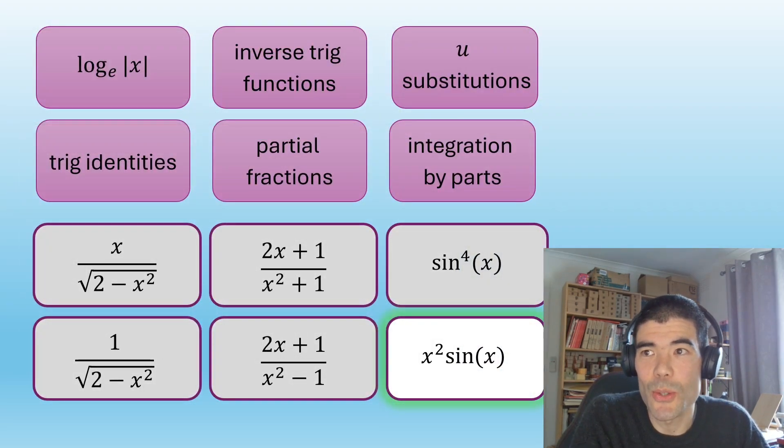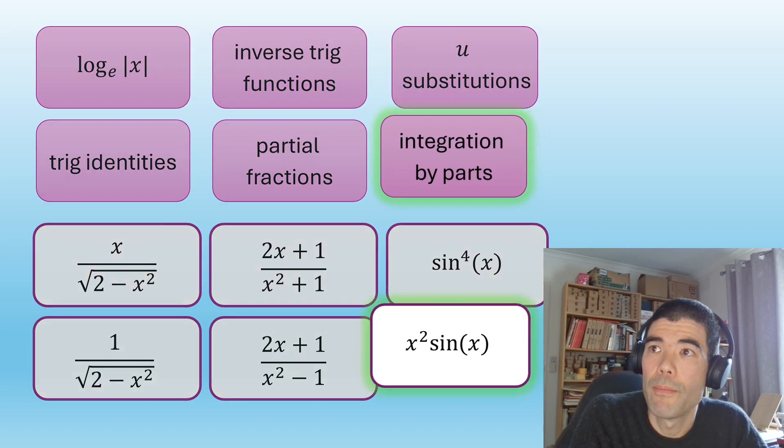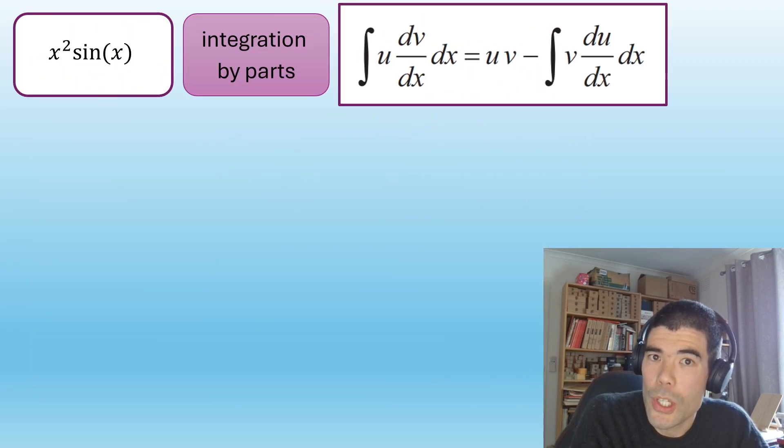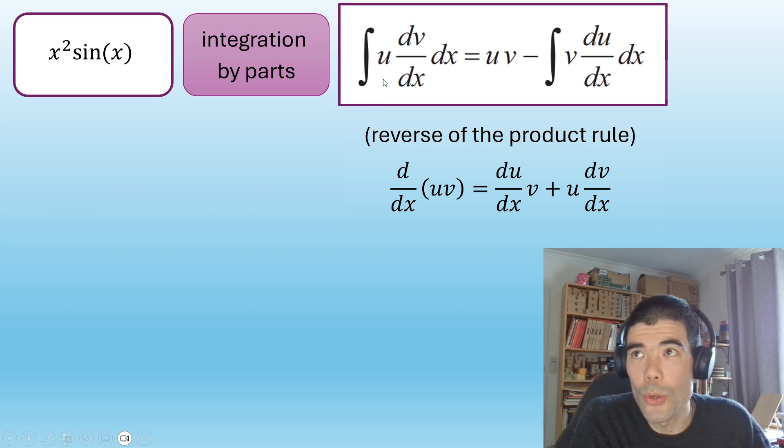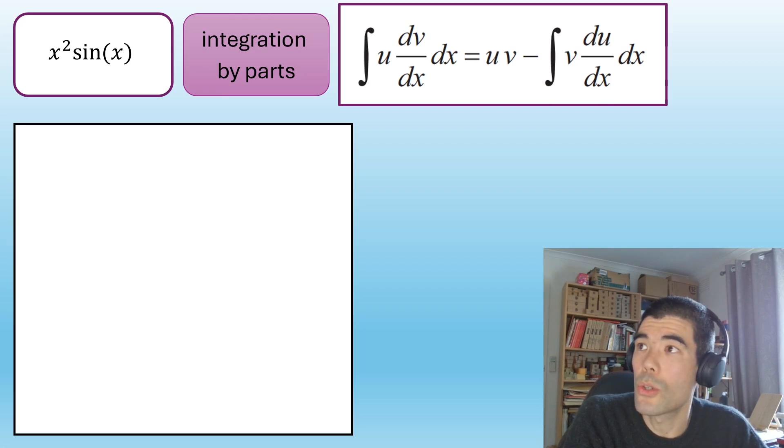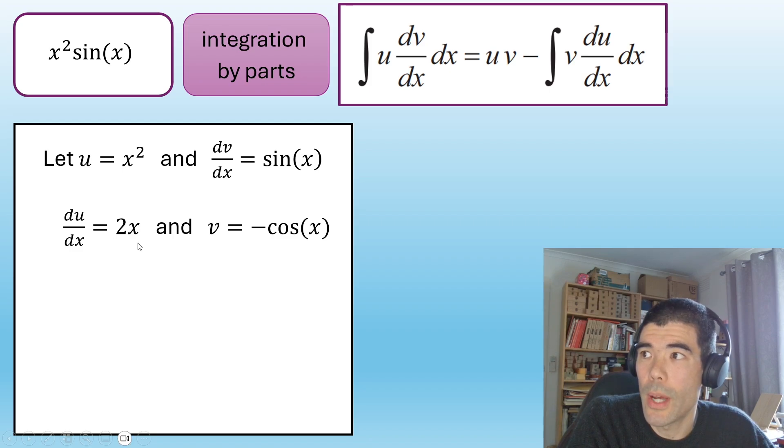Alright, so what could this last integral be? Well, there's only one left and it's integration by parts. Now this was new to the study design in 2023. And what it is, we have a formula on our formula sheet, but it's actually just the reverse of the product rule for differentiation. So what we're looking for is in our integral, something that can be u, something that can be dv dx. In general, the u should be something that when we differentiate it, it's going to become simpler. And the dv dx, well firstly, it needs to be something that we can integrate, because we need this function v here. And then this v du dx term again needs to be something that we can integrate. So in our example, we're going to let u be x squared and dv dx be sine x. So letting u be x squared, when we take our du dx, it's going to be 2x, it's going to be simpler. Okay, 2x is simpler than x squared.